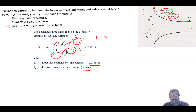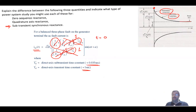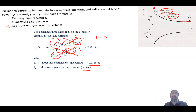As t approaches infinity, the exponential terms go to zero and we are left with one over xd, the synchronous reactance. This is the reactance used under steady state to limit the current — of course, the protection system should have cleared the fault well before that point.